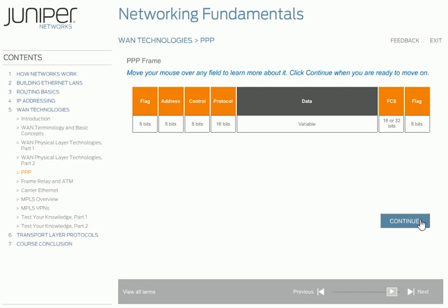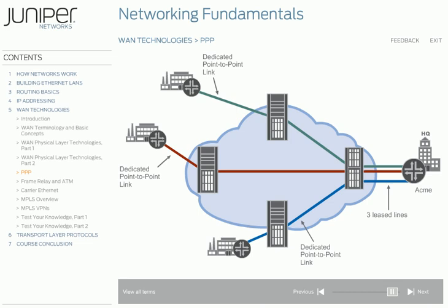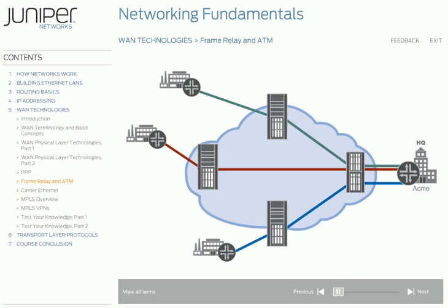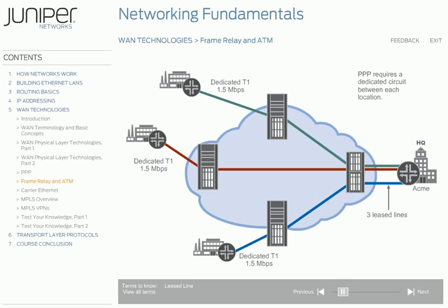As the Acme company grows and establishes remote sales offices as well as additional manufacturing locations, the network continues to grow. One approach is to lease additional dedicated point-to-point links, one for each remote location. This solution, however, can be expensive. The desire for a more cost-effective and scalable WAN technology led to the development of frame relay. PPP is an effective solution for businesses with multiple locations that need to communicate over a WAN. One drawback, though, is that PPP requires a dedicated circuit between each location. These circuits are called leased lines, and while they are owned by the service provider, no other devices can send information across that circuit. While leased lines provide guaranteed bandwidth between sites, they tend to be expensive, and companies pay for network capacity they might not fully use.